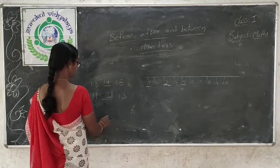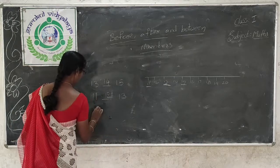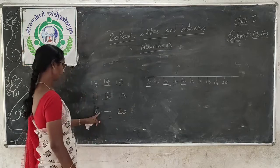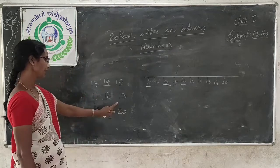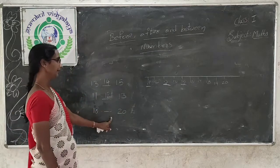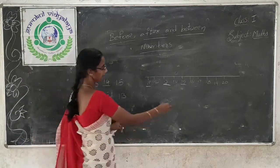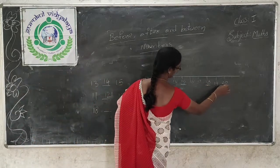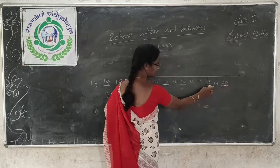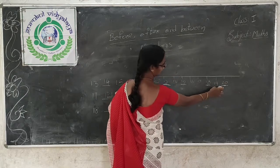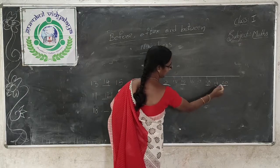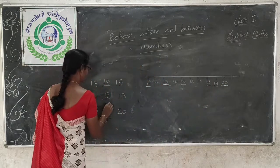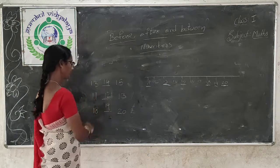Next, 18 and 20. Which number comes between 18 and 20? 19. So 19 comes between 18 and 20.